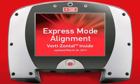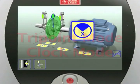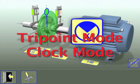This touch tip will present an alignment technique developed by Vibraline called the Vertizontal Compound Move, designed to apply the express mode method to complete the alignment with as few moves as possible. Two other measurement modes, tri-point and clock method, are described in a separate touch tip.